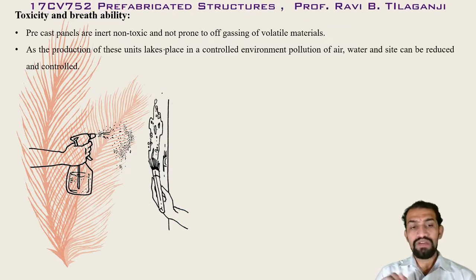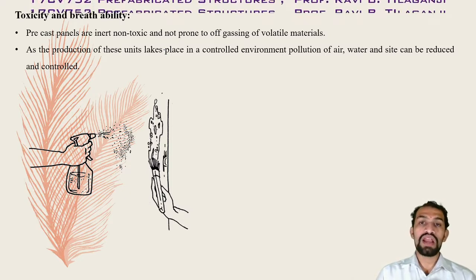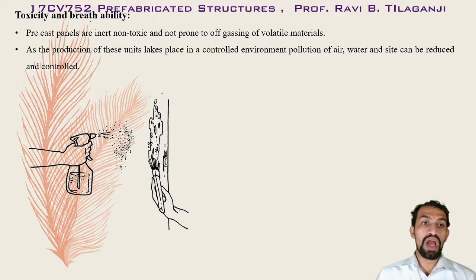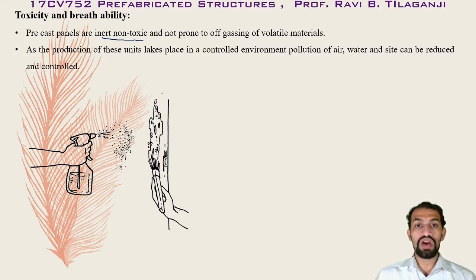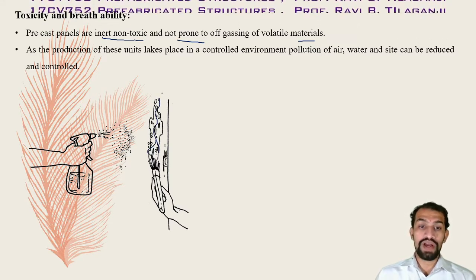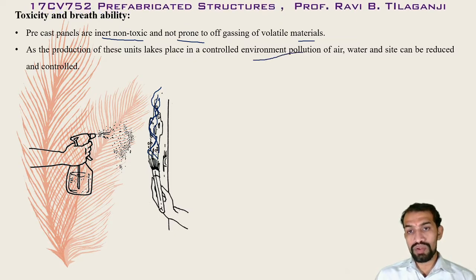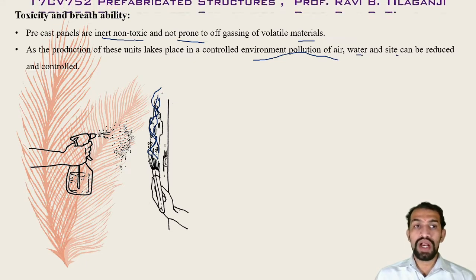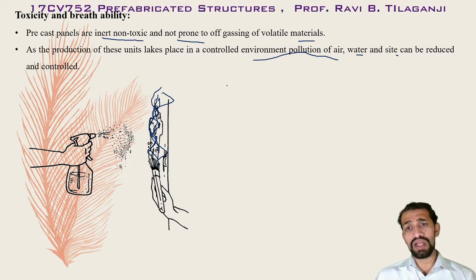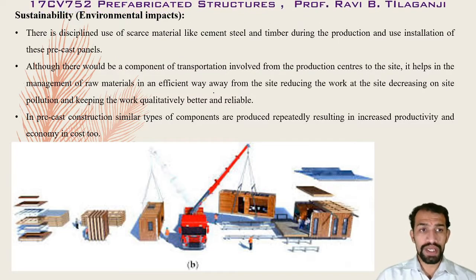Regarding toxic and breathability concerns, precast concrete is made of inert, non-toxic, and non-outgassing materials. Sometimes certain materials can catch fire or release gases. Production of precast units takes place in a controlled environment so that pollution of air, water, and site can be reduced and controlled. If any toxic air comes from panels, they need to be placed away from areas that would disturb the society or habitats.